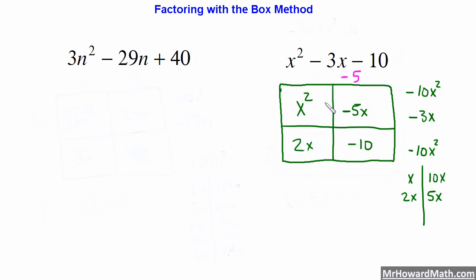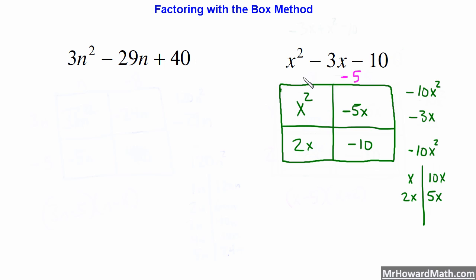If you need help with greatest common factors, look for some additional videos on that — it's beyond the scope of this video. Now looking at this column, the greatest common factor is just an X. So now we have one factor identified right here: X minus 5.